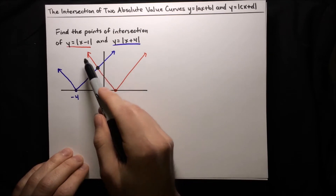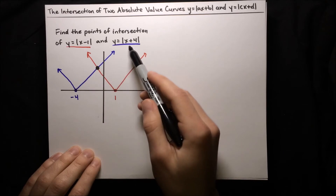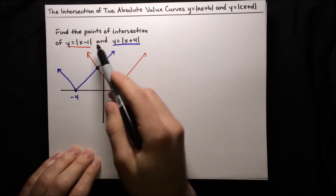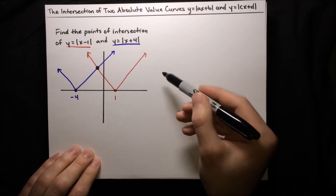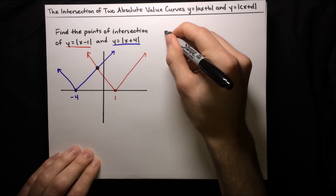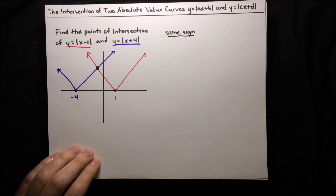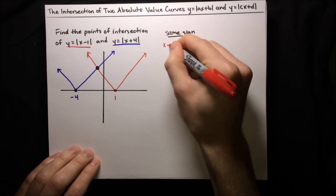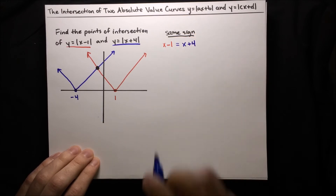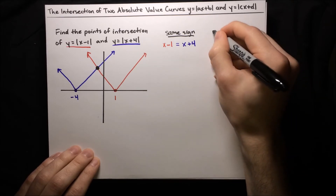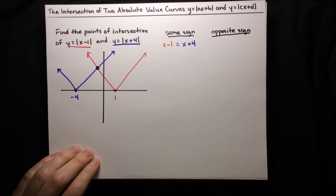So let's think about how we're going to solve for the points of intersection algebraically. If these two absolute values evaluate to the same number for some input x, then the insides of the absolute values are either of the same sign or they have opposite signs. So we have two possibilities: either they're the same sign, meaning the argument of the first absolute value, x minus 1, is just equal to the argument of the second absolute value, x plus 4, or they could be of the opposite sign.